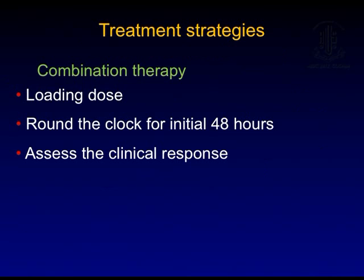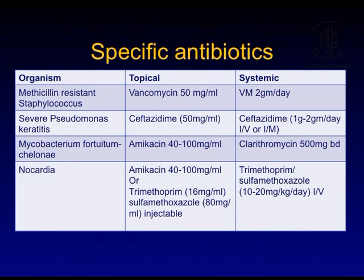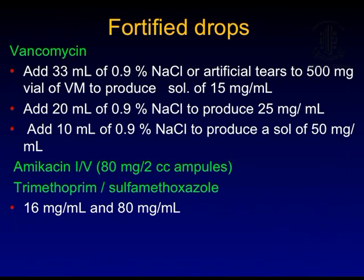Treatment begins with a loading dose around the clock for the initial 48 hours, and clinical response must be assessed. When specific organisms are present, specific antibiotics are required. For methicillin-resistant staph, vancomycin is started. For severe Pseudomonas keratitis, ceftazidime may be tried. For Mycobacterium fortuitum or chelonei, amikacin is used; if the ulcer is severe, clarithromycin is added. For Nocardia, amikacin or trimethoprim; in severe ulcers, trimethoprim-sulfamethoxazole systemically.